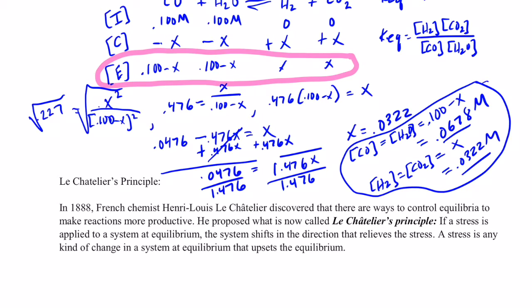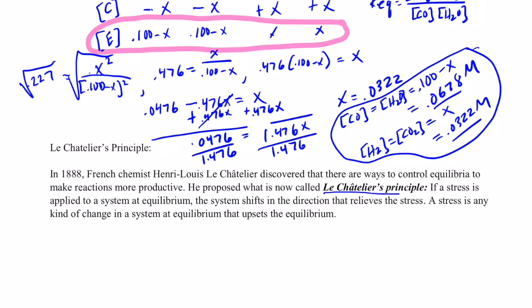discovered that there are ways to control equilibria to make reactions more productive. He proposed what is now known as Le Chatelier's principle, which simply says,